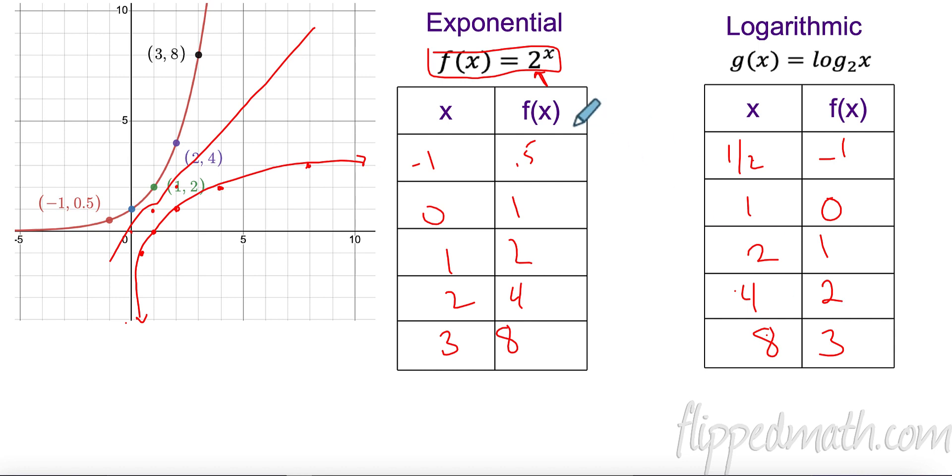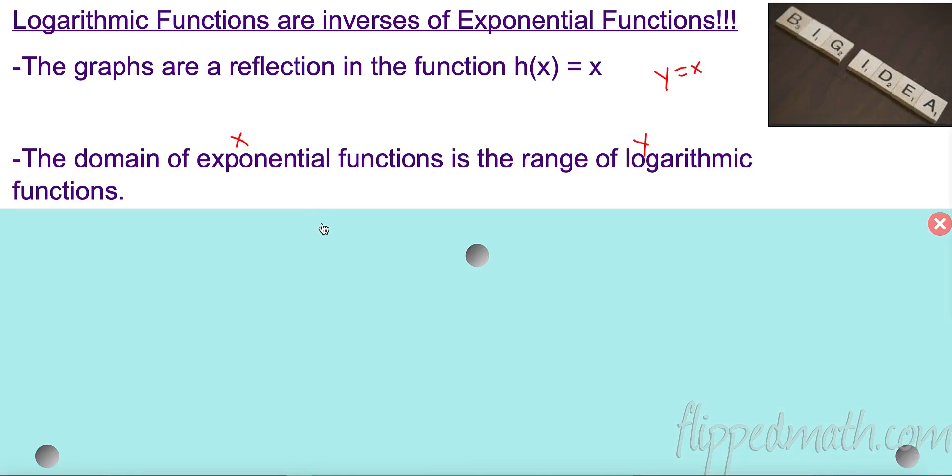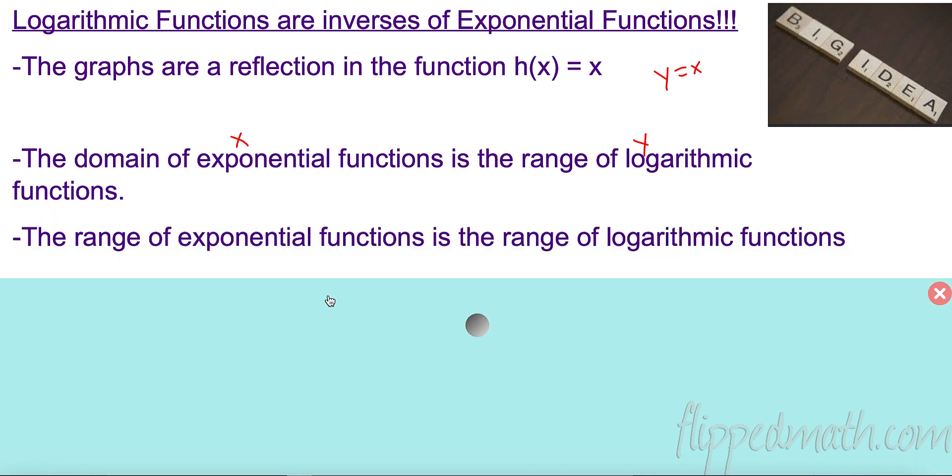Likewise, the range of my exponential is my domain of my logs. Half, half, 1, 1, 2, 2, 4, 4, 8, 8. No way. Super cool. I know you must be pumped about that. So the domain of the exponential is the range of the logarithmic and vice versa. The range of the exponential is the domain of the logarithmic or the x values of the log. They're inverses.